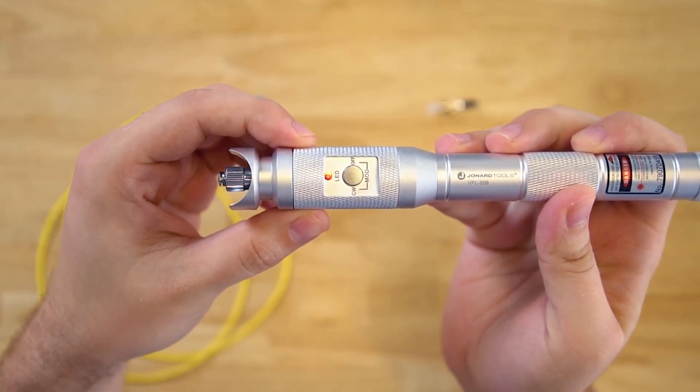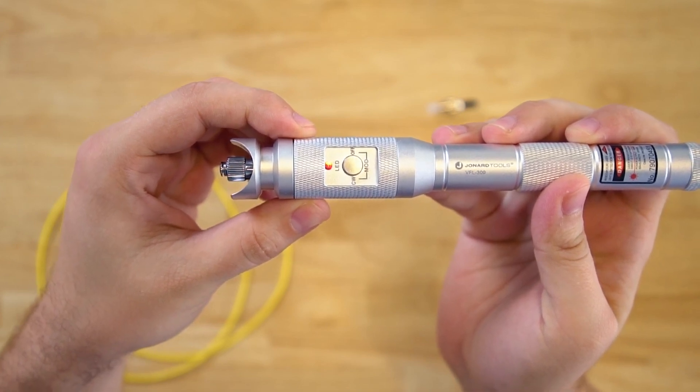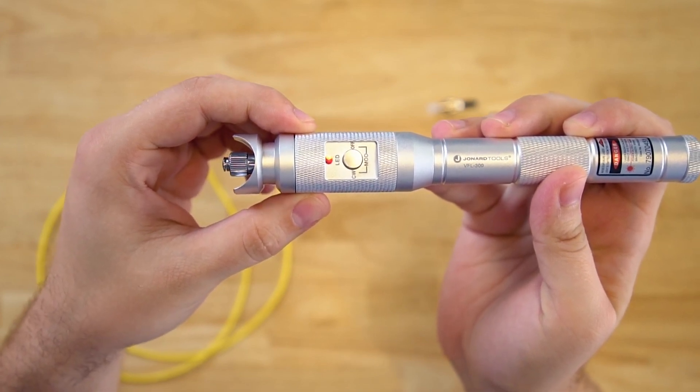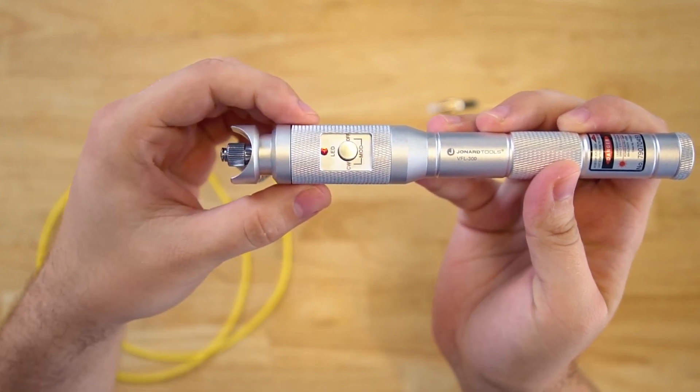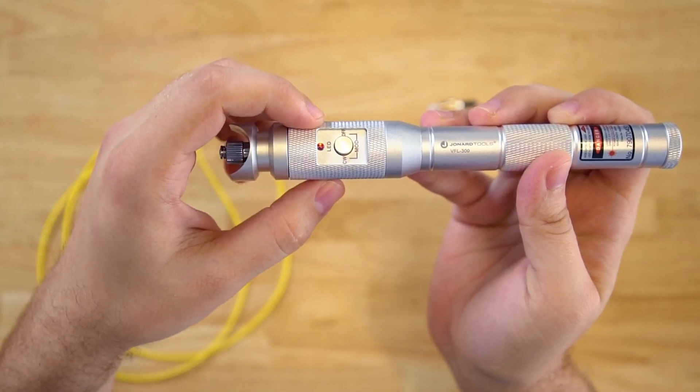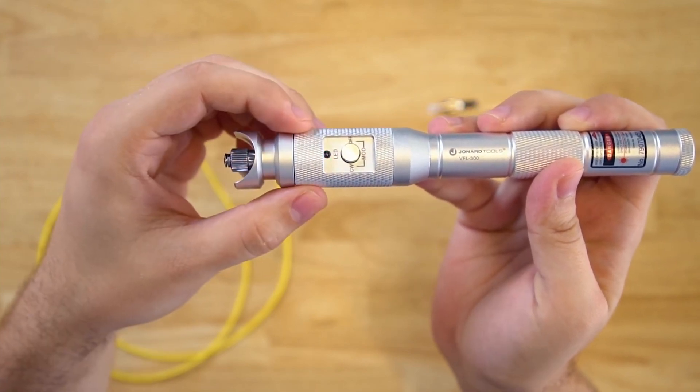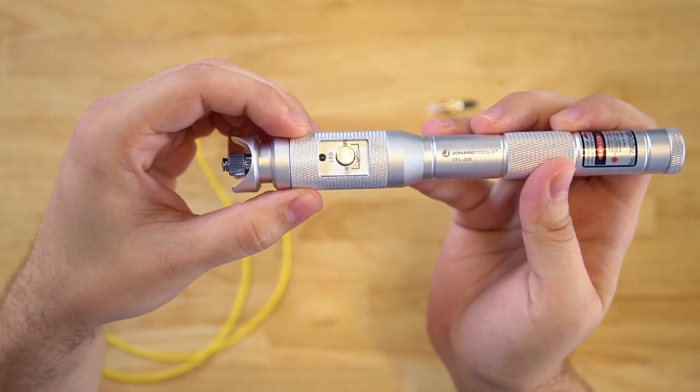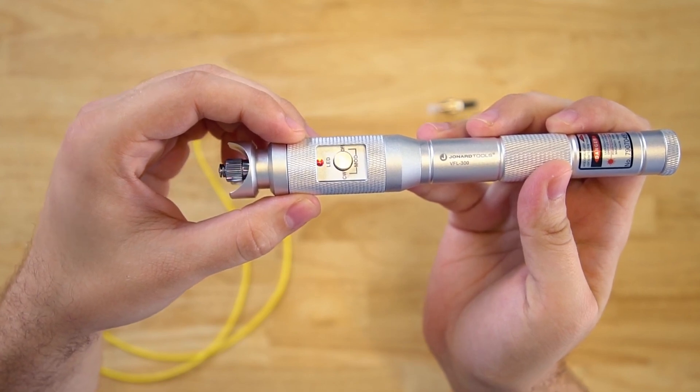The first mode is continuous wave mode, which leaves the laser on at all times. The second button press changes it to pulse mode, which rapidly cycles the laser. The third mode is a slower pulse mode, which also continuously cycles the laser.